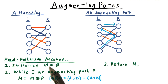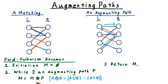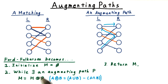We initialize the matching to the empty set, and then while there is an augmenting path, we update the matching to be the symmetric difference between the current matching and the path that we found. The symmetric difference includes an element if it's in exactly one of these sets. Alternatively, you can think about it as the union of the two sets minus the things that are in both. The things that are in both here correspond to matched edges in the path — remember that we flipped them to being unmatched. And finally, once there are no more augmenting paths, we simply return the matching.